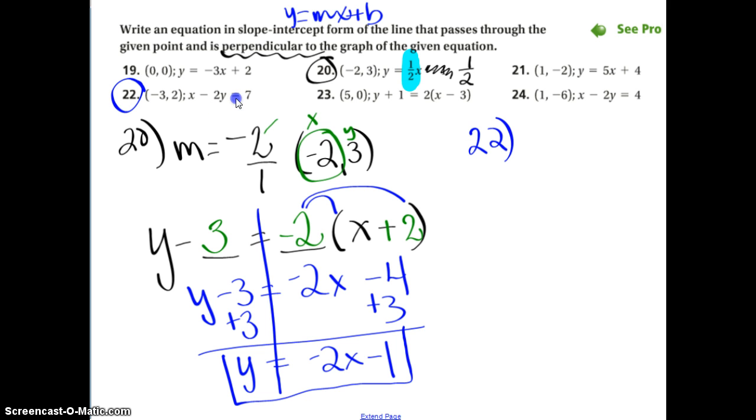Oh, gosh. This is not even graph ready yet. I don't know what this slope is. x minus 2y equals 7. In order to figure out what this slope is, I have to solve for y.